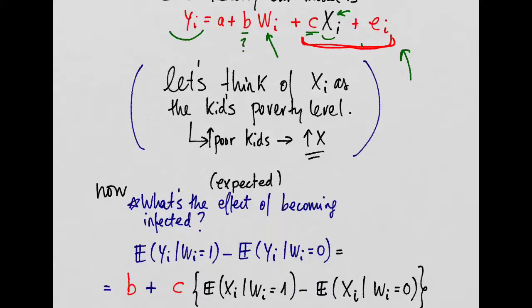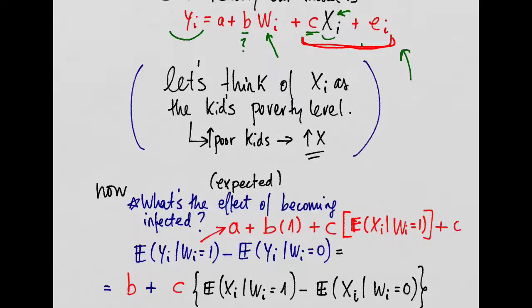Well, the expectation of the outcome, given that the kid is infected, which is A plus B times 1. Since we know that the kid is infected, we know that W is equal to 1. Plus C times whatever we expect the unobservable characteristics of this kid, the poverty level, or whatever, whatever we expect it to be, given that this kid is infected. Right?